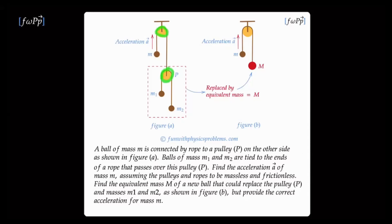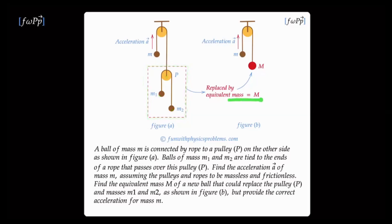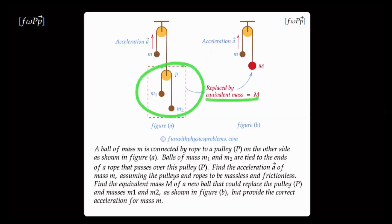This is a two-pulley problem where all the masses are different. The point is to find the acceleration of the topmost mass. The second part is to replace the system inside the box, which is made up of a pulley and two masses, by an equivalent mass m such that the two systems are identical as far as the acceleration of the top mass is concerned. What is that equivalent mass which will replace the whole system?